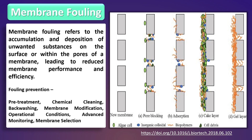Chemical cleaning: periodic chemical cleaning using appropriate cleansing agents can help remove fouling materials from the membrane surface. Different types of cleaning agents are used depending on the nature of fouling — organic, inorganic, biofouling, etc.